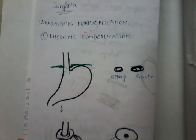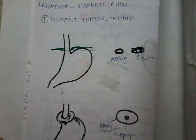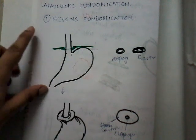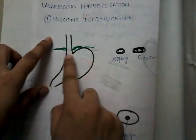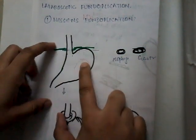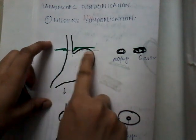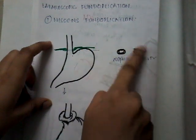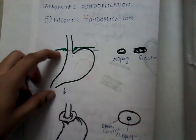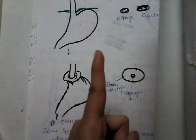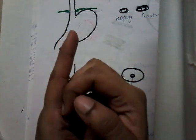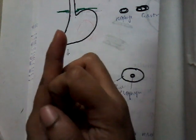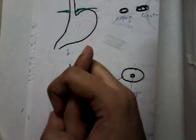The first surgery is fundoplication, and among them the first one is Nissen fundoplication. In Nissen fundoplication, this is the esophagus and this is the stomach, and this is the diaphragm. If you do a cross-section at this end, this is the esophagus and this is the stomach. In Nissen fundoplication, we take the fundus and wrap it around the esophagus. The anterior part of the fundus is wrapped anteriorly and the posterior part posteriorly, and here it is sutured.